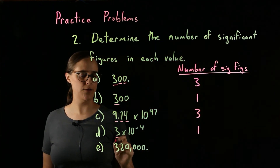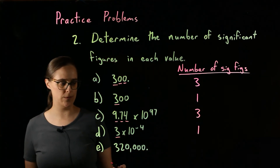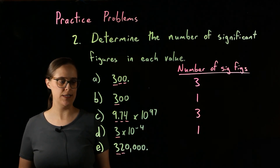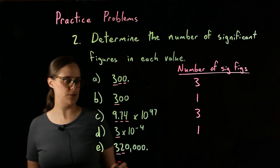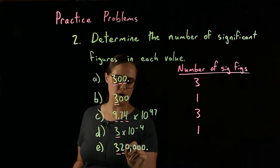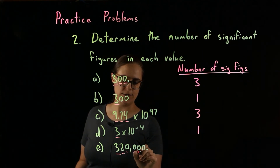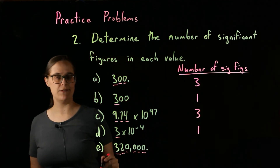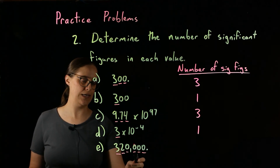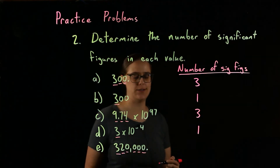Problem E: 320,000 with an actual decimal point at the end. The 3 and the 2 are both significant because they are non-zero. The decimal point at the end means all of the zeros are also significant. So all of these digits are significant — 1, 2, 3, 4, 5, 6. We have 6 significant figures.